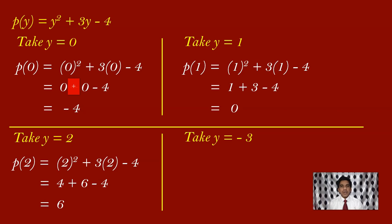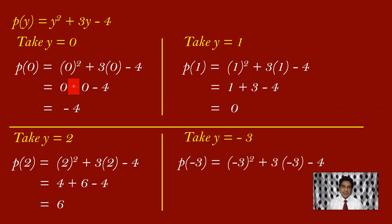Now I would like to find p of minus 3. So wherever there is y, you have to write minus 3. So we get minus 3 whole square plus 3 of minus 3, minus 4. Minus 3 whole square is 9. 3 into minus 3 is minus 9. So you will have 9 minus 9 minus 4. 9 minus 9 is 0, so the result is minus 4.